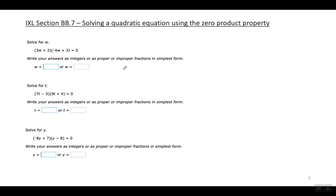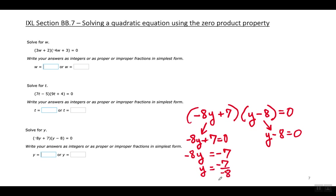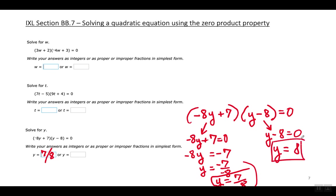Last example: negative eight Y plus seven times Y minus eight equals zero. Set each factor equal to zero and solve for Y. Move the seven to the right making it negative, then divide by negative eight — a negative divided by a negative equals a positive — so Y equals seven over eight. On the other factor, move the eight to the right making it positive — Y equals eight.